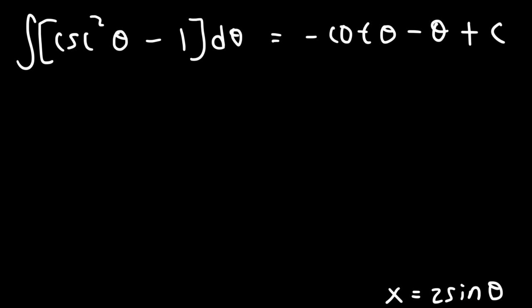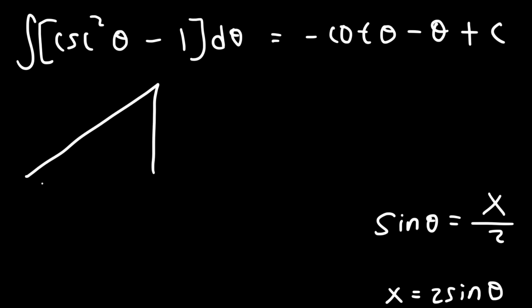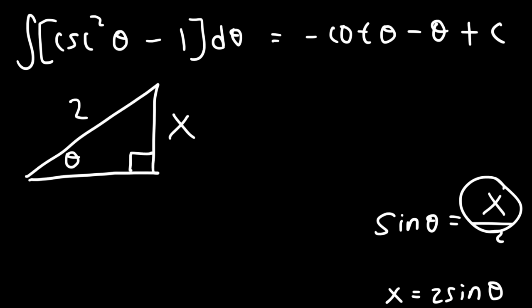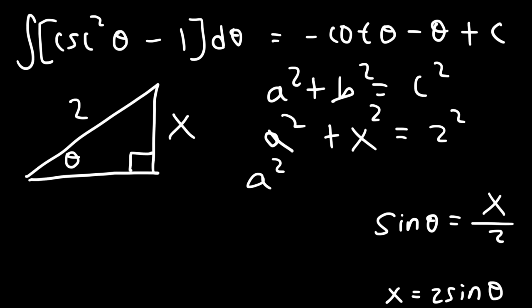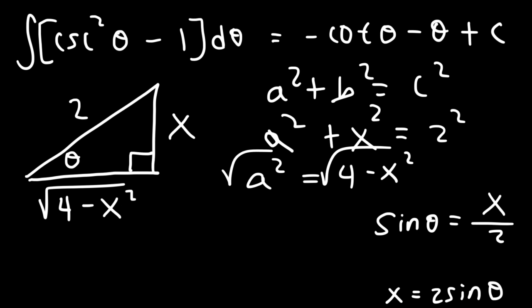This is a very long problem. Let's go back to where x equals 2 sine theta and divide by 2, so sine theta is x over 2. We're going to make a right triangle. Based on SOH-CAH-TOA, sine is equal to opposite divided by hypotenuse. So x goes on the opposite side and 2 is the hypotenuse. Using the Pythagorean theorem, a squared plus b squared equals c squared, where b equals x and c equals 2. Moving x squared to the other side, a squared is 4 minus x squared, so the missing side is the square root of 4 minus x squared.